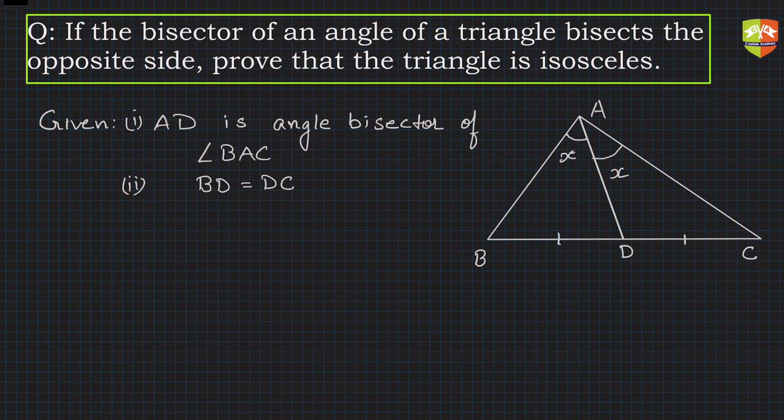To prove the triangle is isosceles, meaning what you have to prove? AB is equal to AC. Let's see how to prove this.